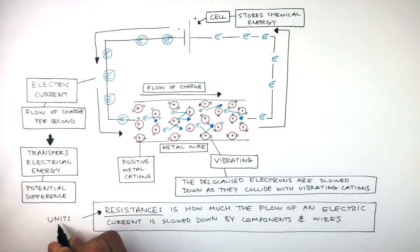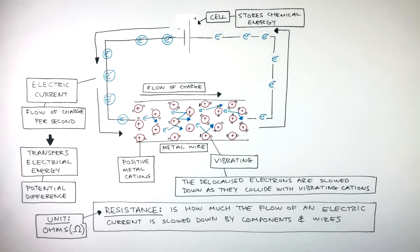The unit for resistance is ohms and has this symbol, which is omega, a Greek letter taken from the Greek alphabet.